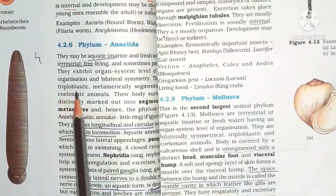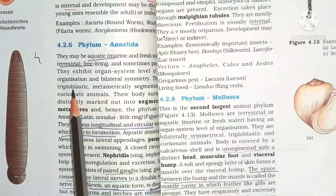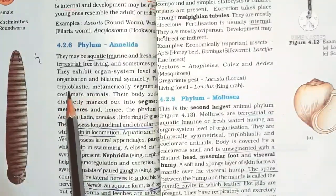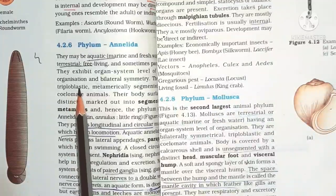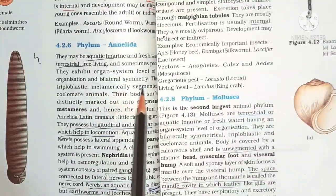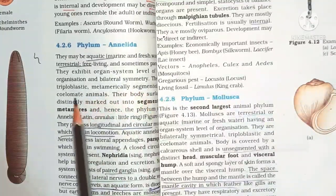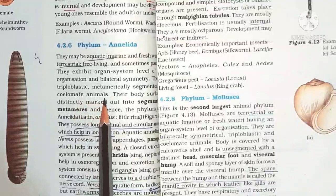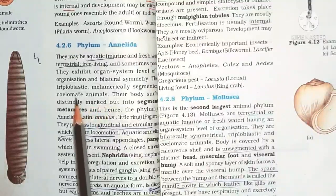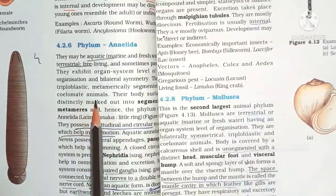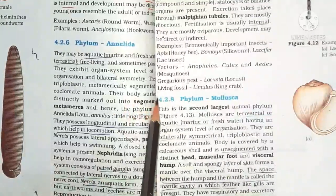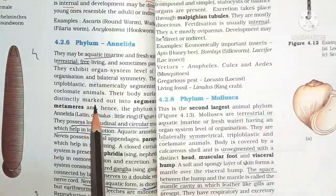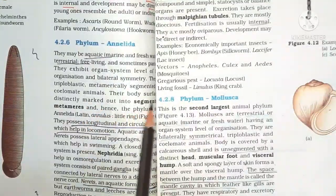Triploblastic means three embryonic layers: ectoderm, endoderm, and mesoderm. Coelomate means true body cavity. Their body surface is distinctly marked out into segments.